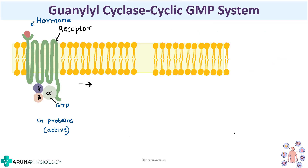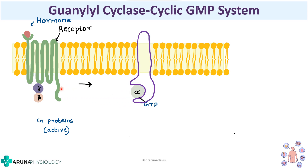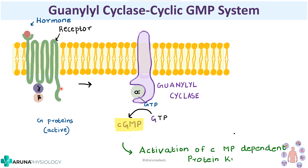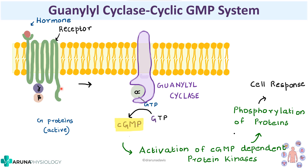Next is the guanylyl cyclase cGMP system, which is very similar to the adenylyl cyclase cAMP system. Once the hormone binds to the GPCR and activates it, the alpha subunit dissociates and binds to an enzyme called guanylyl cyclase. Here, GTP is converted to cGMP instead of cAMP. This cGMP causes activation of cGMP-dependent protein kinases, leading to phosphorylation of proteins and cellular response. The enzyme and second messenger differ but the mechanism is similar.